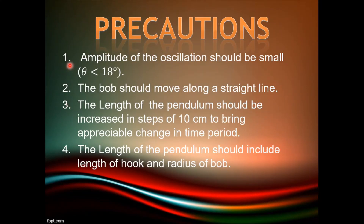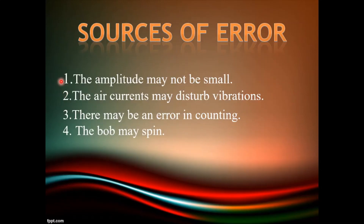Precautions: 1. Amplitude of the oscillation should be small, that is theta should be less than 18 degrees. 2. The bob should move along a straight line. 3. The length of the pendulum should be increased in steps of 10 cm to bring appreciable change in time period. 4. The length of the pendulum should include the length of the hook and radius of bob. Sources of error: 1. The amplitude may not be small. 2. Air current may disturb vibration. 3. There may be error in counting. 4. The bob may sway.